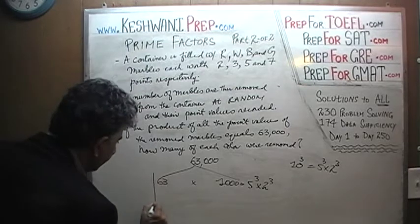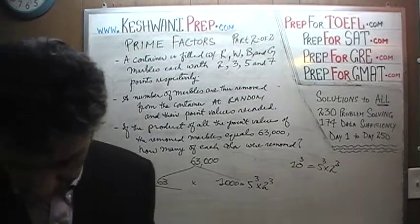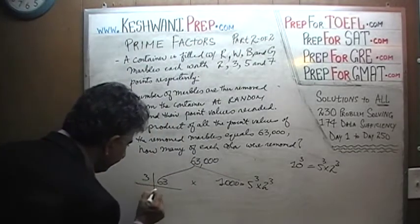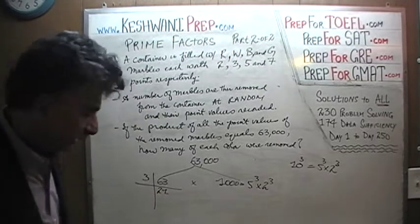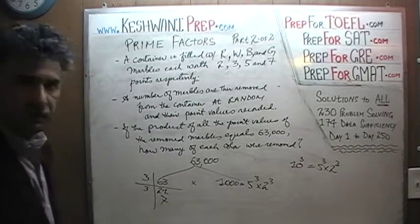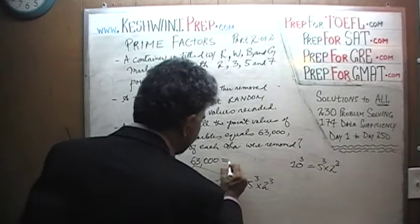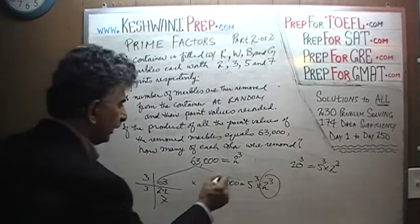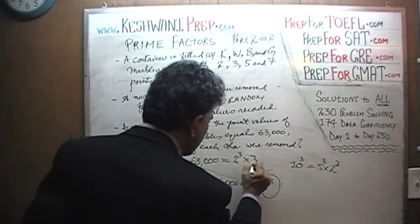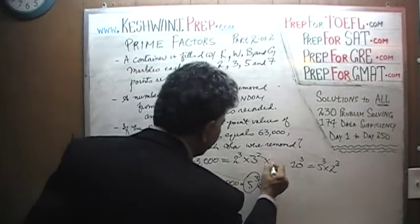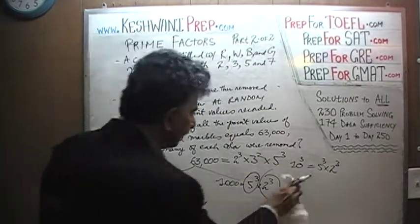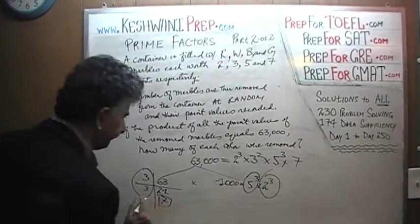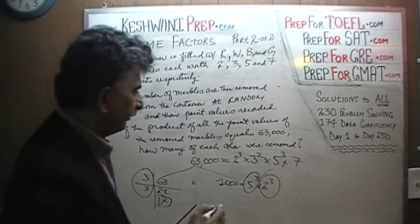63 — is it divisible by 2? Obviously not, it's an odd number. We divide it by 3: 2 plus 1 equals 3, so yes. We get 21, and we can divide by 3 one more time and we get 7. That's it. In other words, 63,000 can be written as 2 cubed times 3 squared times 5 cubed times 7. The work is done.